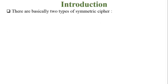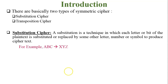Let us start with types of symmetric cipher. There are basically two types: first is substitution cipher and second is transposition cipher. Substitution cipher means substitute or replace a given letter with numbers, another letter, or special symbols. For example, plain text ABC — character A is replaced with X, B with Y, and C with Z — so ABC becomes XYZ as cipher text.